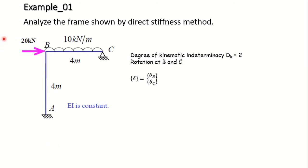This is the frame we have here. We analyze the frame by the direct stiffness method. The load shown here has joint B subjected to a concentrated force of 20 kN, and member BC carries a UDL of 10 kN per meter. Both members are 4 meters in length and EI is constant. Inspecting the degrees of freedom, this frame has 2 degrees of freedom — kinematic indeterminacy is 2 — which are rotation at B and rotation at C. The displacement matrix delta consists of theta_B and theta_C.